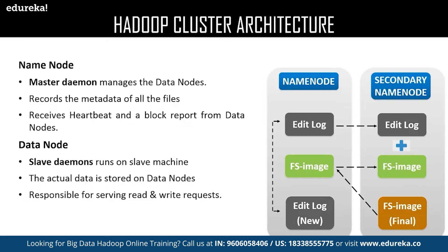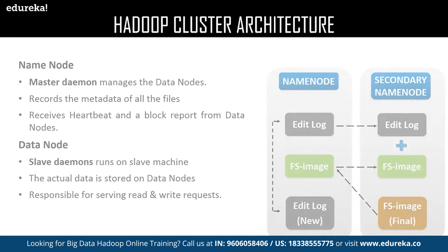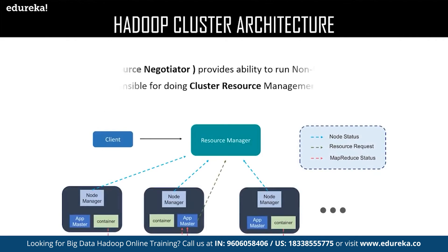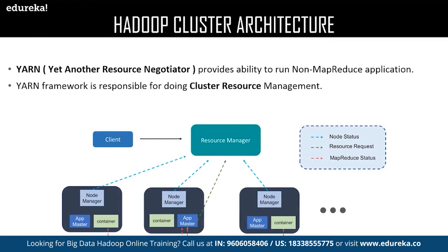The last HDFS component is the secondary name node. The secondary name node is not actually a backup of the name node, but it acts as a buffer which saves the latest updates to the FS image obtained in the intermediate process and finally updates them to the final FS image. Now let us discuss YARN — Yet Another Resource Negotiator. YARN consists of the following elements: node manager, app master, and container.